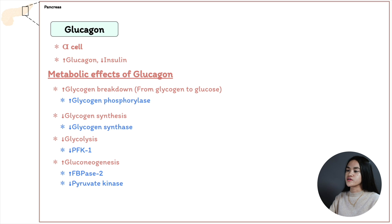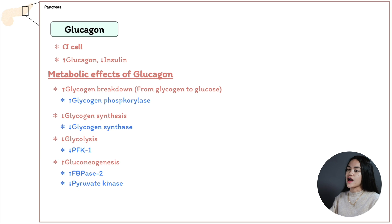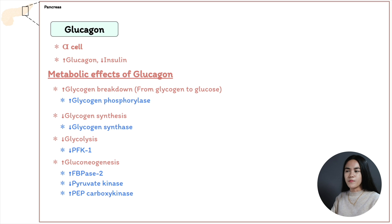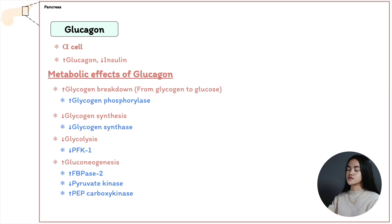Pyruvate kinase catalyzes the last step of glycolysis, converting phosphoenolpyruvate (PEP) to pyruvate. Glucagon inhibits this via cyclic AMP-dependent phosphorylation, preventing PEP conversion to pyruvate, thus inhibiting pyruvate oxidation via the citric acid cycle. The buildup of PEP further activates gluconeogenesis, since glucagon also triggers PEP carboxykinase.